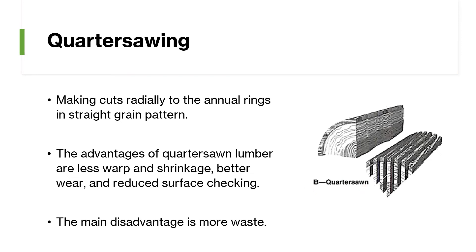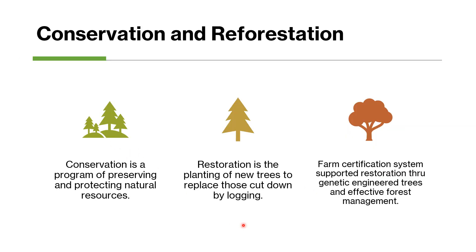Conservation and reforestation. Conservation is a program to preserve and protect natural resources — we conserve the forest. Restoration is planting — we plant new trees to replace those cut down by logging. Another thing you need to know is the farm certification system. This system supports restoration through genetically engineered trees and also through effective forest management. These are programs trying to restore and reforest trees.